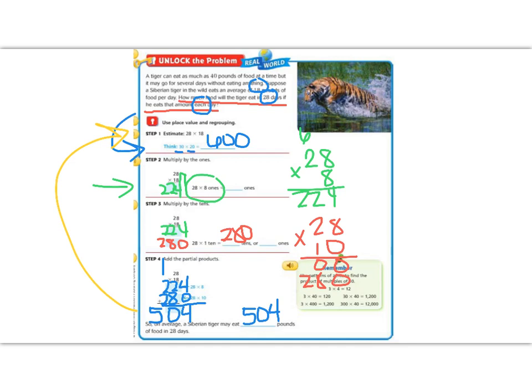So if we have 28 times 18, the first thing we would do is multiply by the 8's. So 8 times 8 is 64. Then we multiply 8 times 2 is 16, plus 2 gives us 22. Notice that's the same number we got over here. The only difference is that in the standard way we would add a magic zero and continue on.